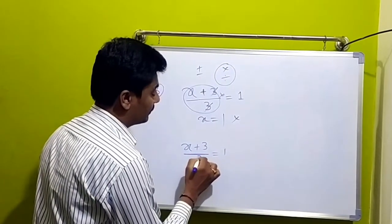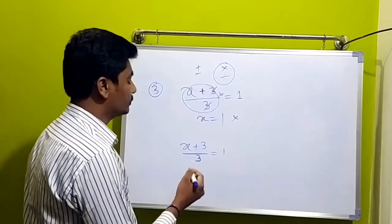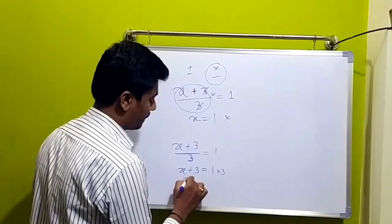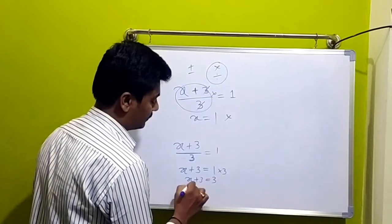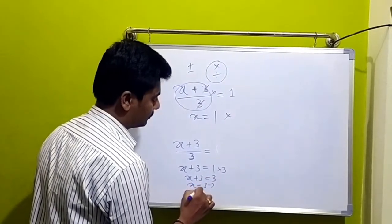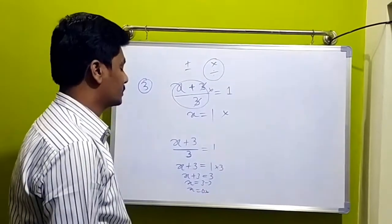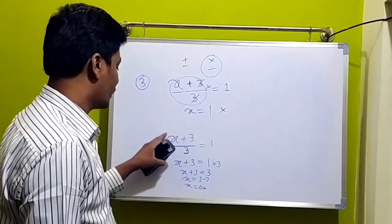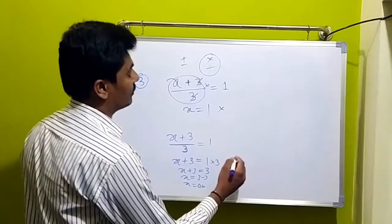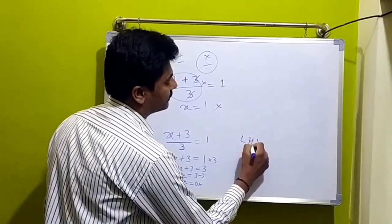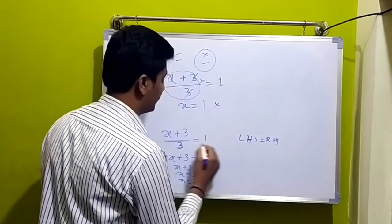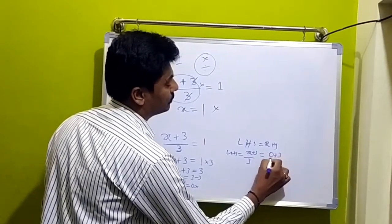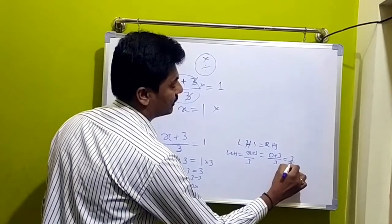Denominator part: 3 is equal to 3. So LHS, RHS, and then division and multiplication. So x plus 3 is equal to 1 into 3. x plus 3 is equal to 3. x is equal to 3 minus 3. So x is equal to 0. Check: 0 plus 3 is equal to 3. That is equal to 3 by 3, which equals 1.